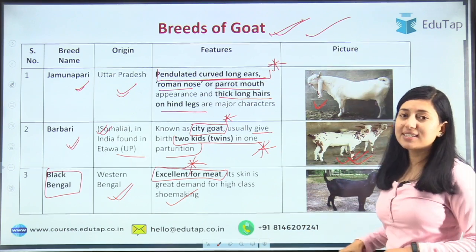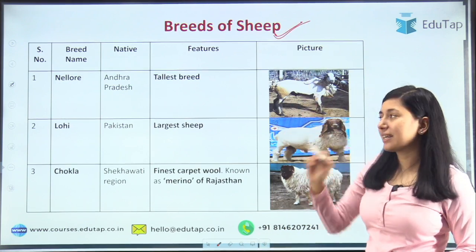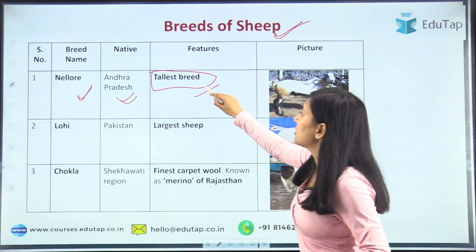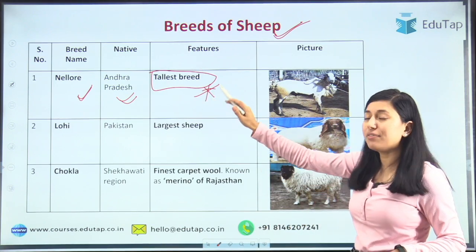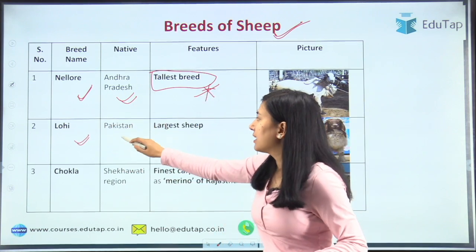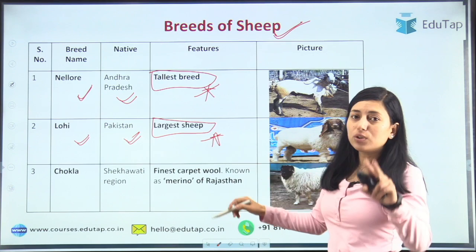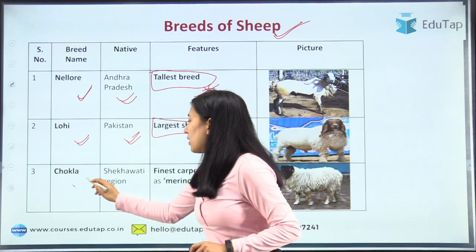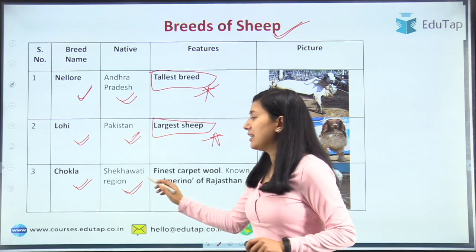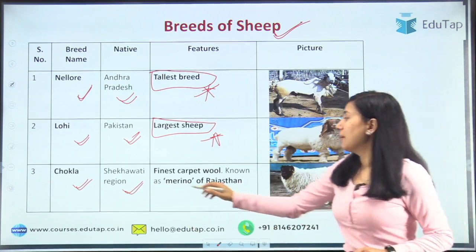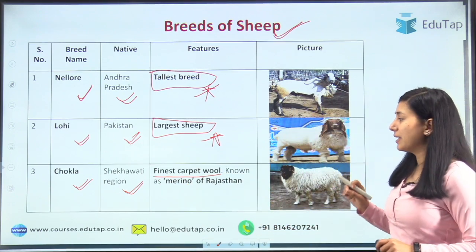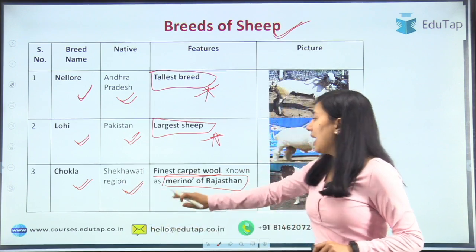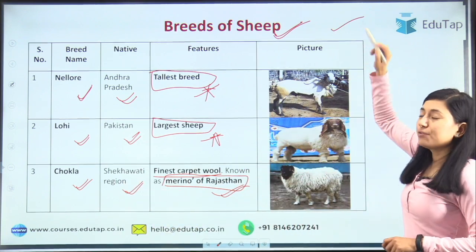Now let's discuss some breeds of sheep. First is Nellore, native to Andhra Pradesh — it is the tallest sheep breed. Then Lohi, native to Pakistan, which is the largest sheep. Remember: largest is Lohi, tallest is Nellore. Next is Chokla, native to the Shekhawati region of Rajasthan. It is famous for producing the finest carpet wool, which is why it is also known as the Marino of Rajasthan.